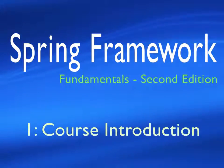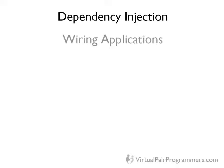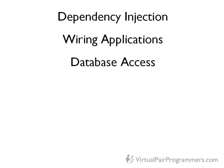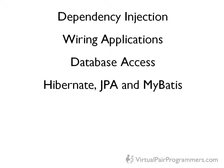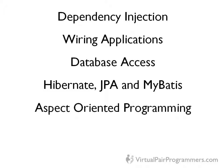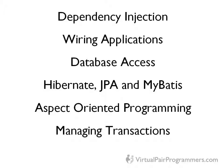On this course, we're going to take you through all of the fundamental features of the Spring Framework. We will be looking at dependency injection, how to wire applications and what that means. We'll see how to access a database. We'll also use Hibernate, JPA and MyBatis. We'll look at aspect-oriented programming and why Spring uses this feature. We'll also look at how to manage transactions in your application and how to do integration testing. A new feature of this second edition is how to use annotations to do wiring. This is a controversial feature of Spring that was added back in version 2.5, but has only become popular since we recorded the last edition, so we'll have a good look at that.